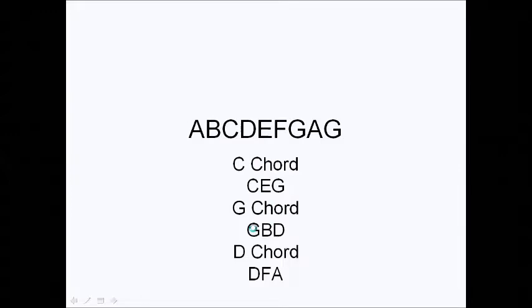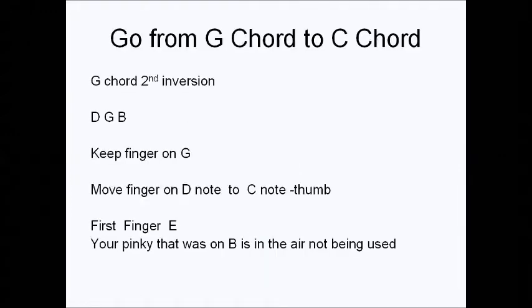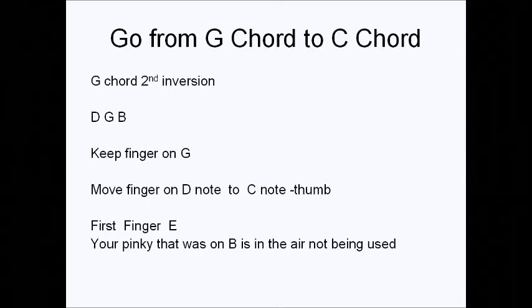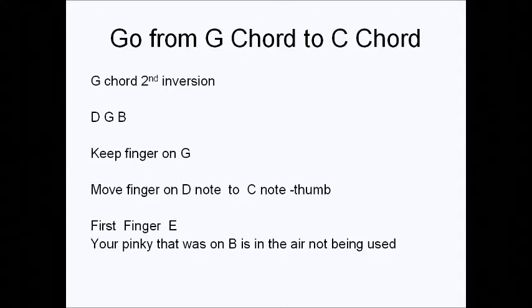These are your notes on a keyboard. C chord is C, E, G in root position. G chord is G, B, D in root position. And a D chord is D, F, A in root position. Now to go from a G chord to a C chord — I actually made a mistake in the first video; I said first inversion but it was actually second inversion. So to make the G chord, you start on D, G, B. When you go from G to C, keep your finger on the G, move your finger from D to C with your thumb, move your first finger to E, and the pinky that was on B is no longer used.